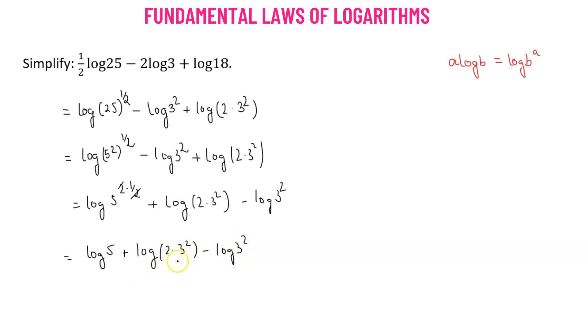Now, for the first term and the second term, we're going to combine these two logarithms using the property log of a plus log of b equals log of a times b, which means we should get log of 5 times 2 times 3 squared.